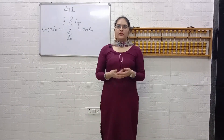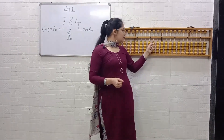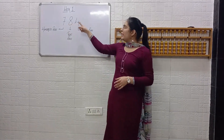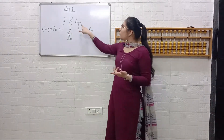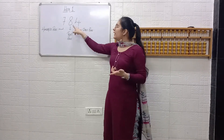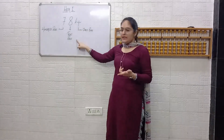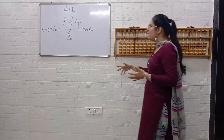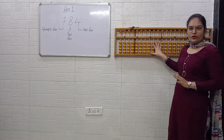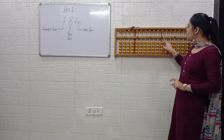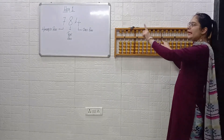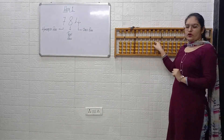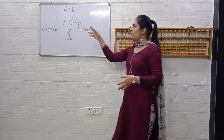Let's take an example to clear your doubt regarding 1s place, 10s place and 100s place. The example is 784. In this, the 4 is at 1s place, the 8 is at 10s place and the 7 is at 100s place. In the same way, if we want to place 784 on the abacus, then 4 will be placed on the 1s rod, 8 will be placed on the 10s rod and 7 will be placed on the 100s rod. So, in this way, we will bifurcate 784.